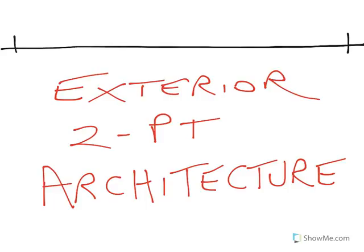Let me quickly show you how to draw exterior two-point architecture. The first thing you need to understand is that our horizon line in this case is going to be high, so that I can give you a nice view of the roof of this building.